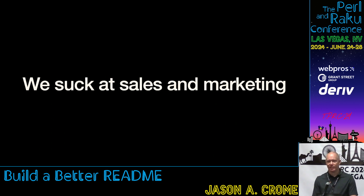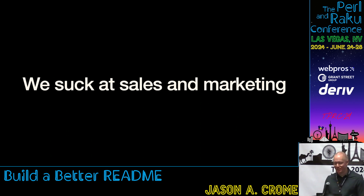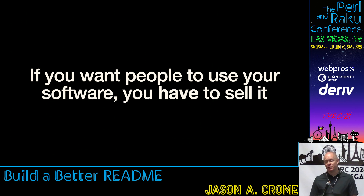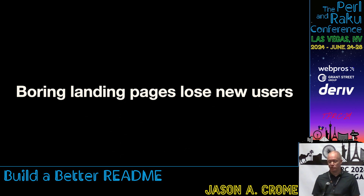Unfortunately, we suck at sales and marketing. And by we, I mean developers. More specifically, I mean Perl developers. I don't think this should come as a surprise to anyone here — we are not really good at selling ourselves in a positive way. If you want people to use your software, you have to be able to sell it. For many open source projects, GitHub is your project's front door. And what people see when they go there should be engaging, compelling, and inviting. Boring landing pages lose new users. So let's give them a reason to stay.